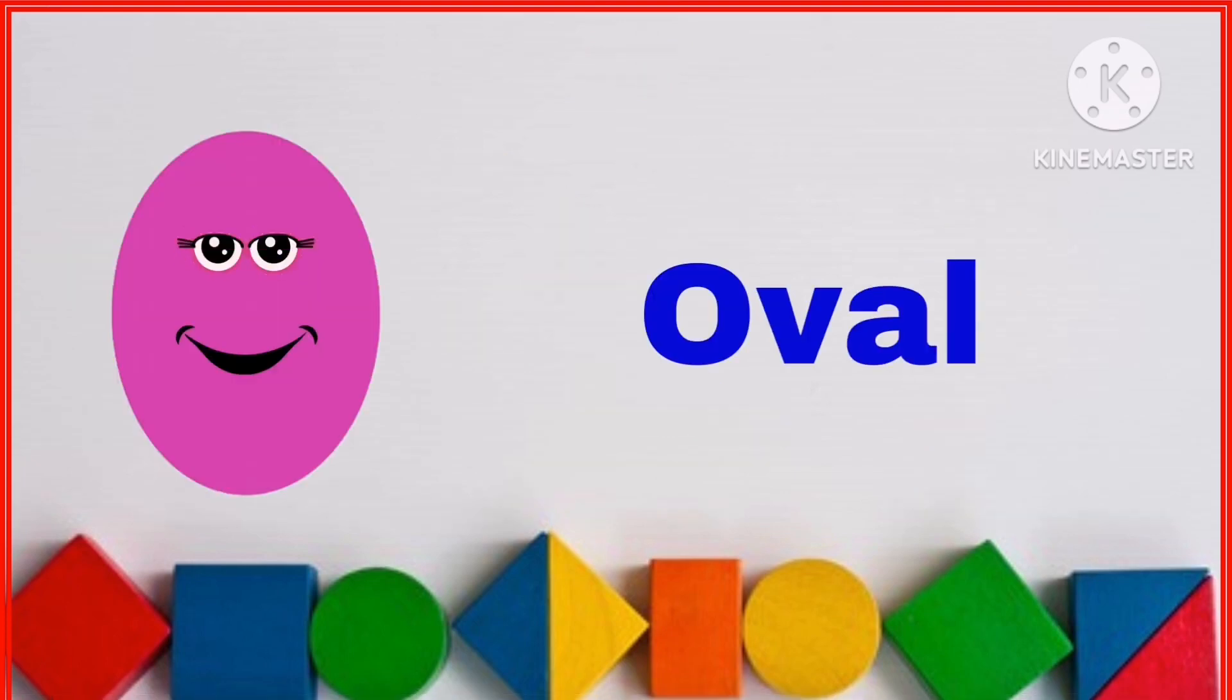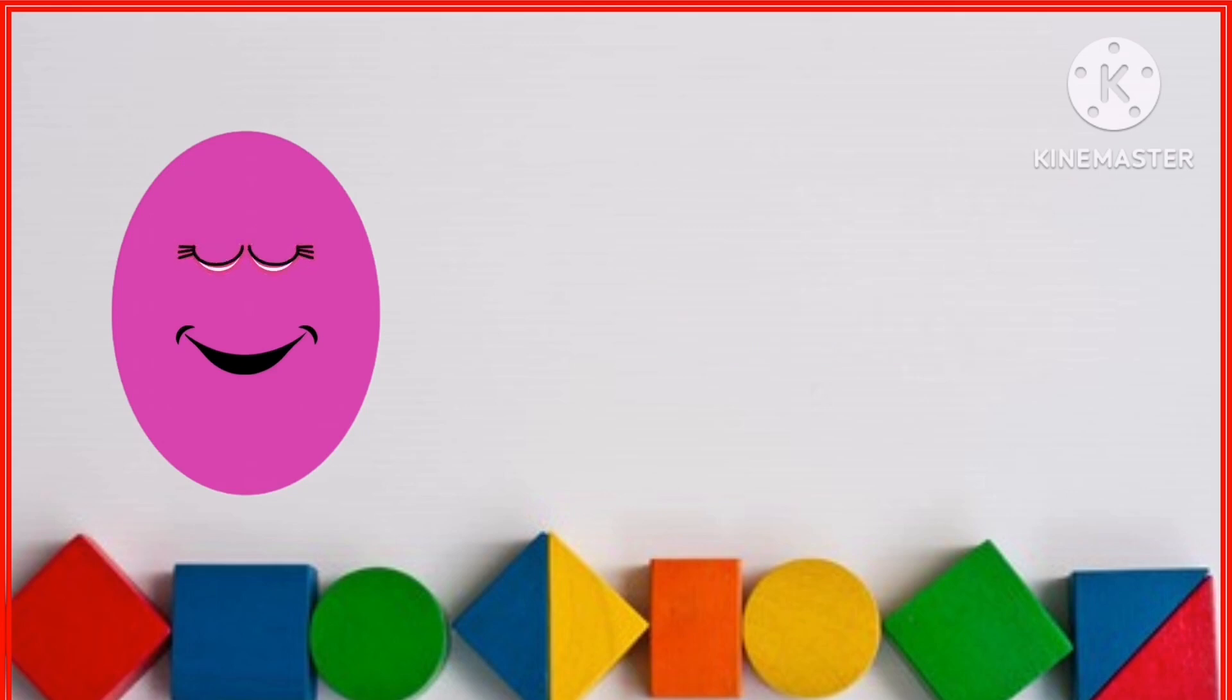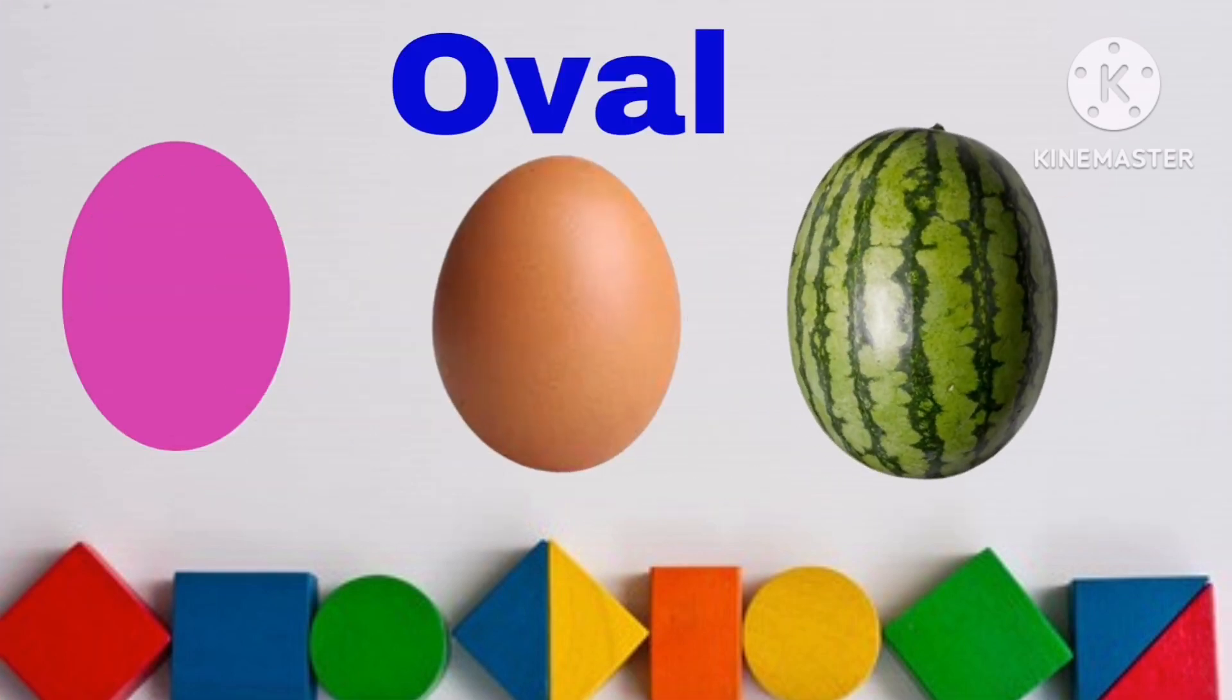I am an oval. Example: egg and watermelon.